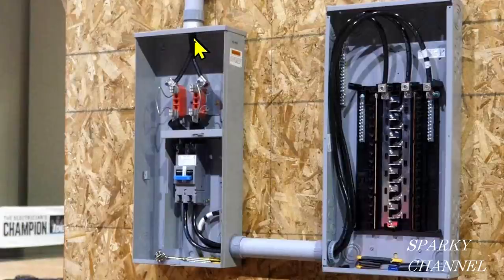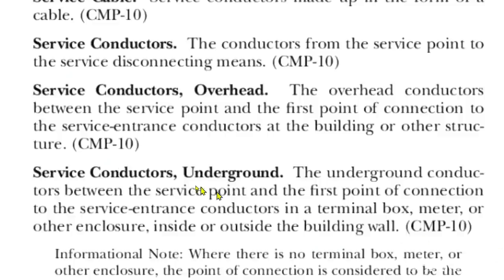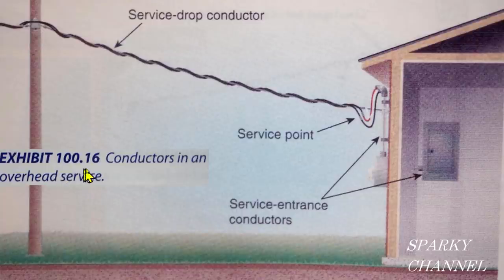Now let's go to the code book and find out exactly what the difference is between these overhead service conductors and these feeder conductors. This is from Article 100 of the 2020 NEC. It says: "Service conductors — the conductors from the service point to the service disconnecting means." And then specifically: "Service conductors, overhead — the overhead conductors between the service point and the first point of connection to the service entrance conductors at the building or other structure." Here we have Exhibit 100.116 in the NEC Handbook.